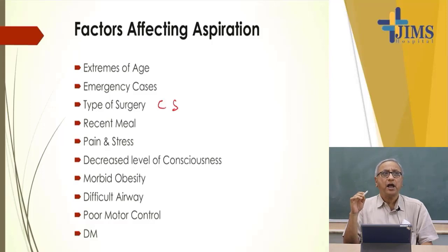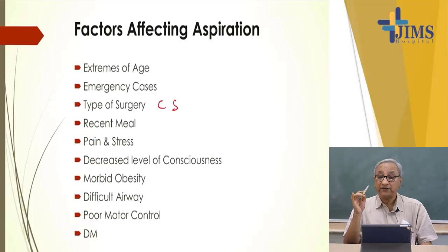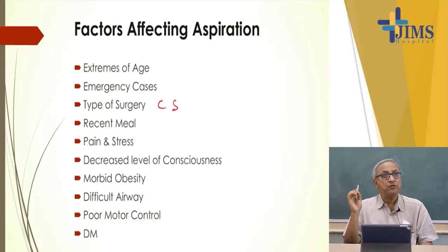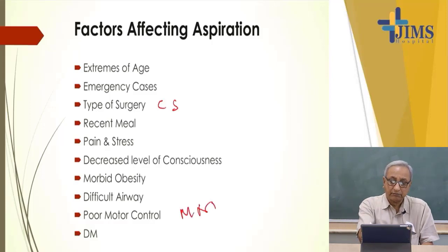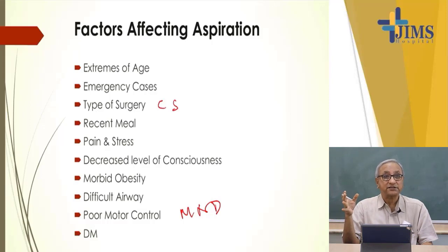Morbidly obese patients present problems due to many comorbidities including diabetes, hypertension, hypothyroidism, and Cushing's disease. Difficult airway is another risk factor — it can increase the chance of aspiration during intubation, and we always take precautions. When there is poor motor control, such as in motor neuron diseases, motor activity is reduced so all sphincters are relaxed, increasing the chances of aspiration. Diabetes mellitus also carries an increased chance of aspiration.